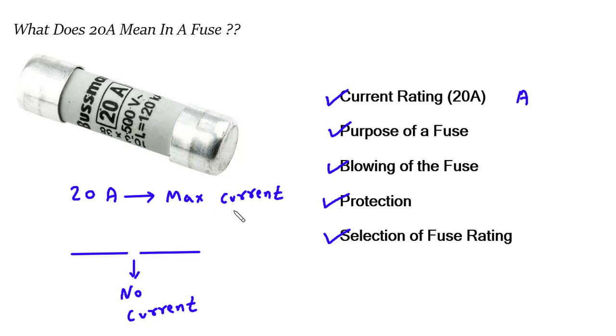In summary, 20A on a fuse means it is rated to handle a maximum current of 20 amperes, and it will blow if the current exceeds this value to protect the circuit from damage due to overcurrent situations.